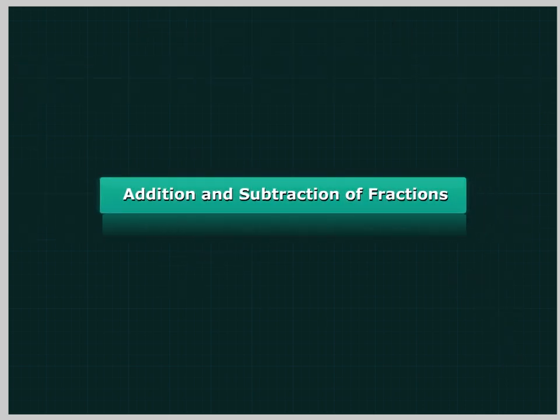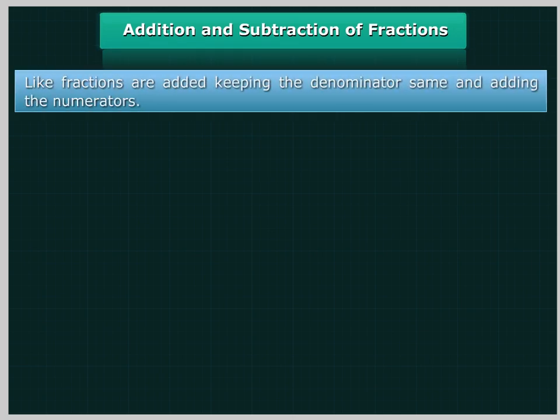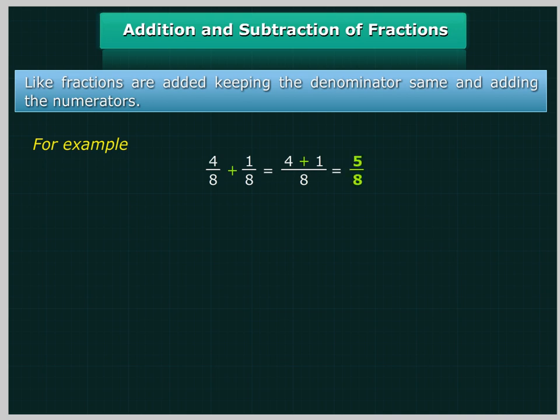Addition and subtraction of fractions. Like fractions are added keeping the denominator the same and adding the numerators. For example, 4 upon 8 plus 1 upon 8 is equal to (4 plus 1) upon 8, which is equal to 5 upon 8.